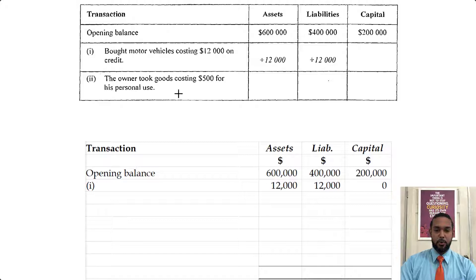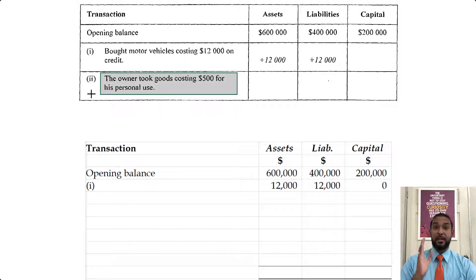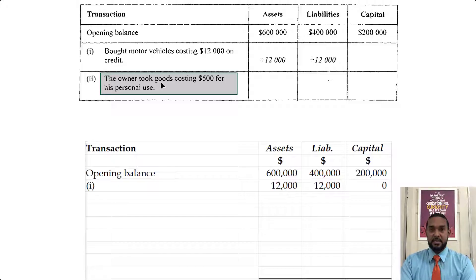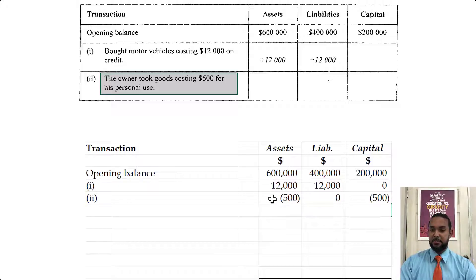The next transaction: the owner took goods costing $500 for his personal use. That's drawings. Drawings is a reduction in capital, so capital is going to go down, as well as assets — because goods or stock or inventory is an asset, and if the owner's taking that out of the business it is decreasing. So you're going to see minus 500 under assets and minus 500 on capital.